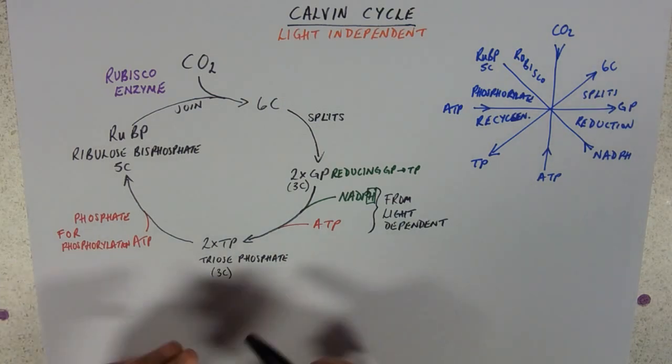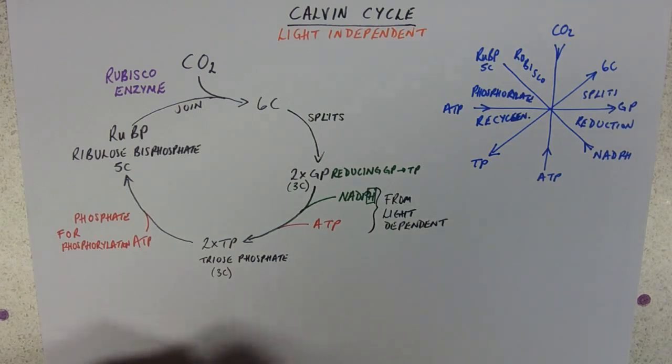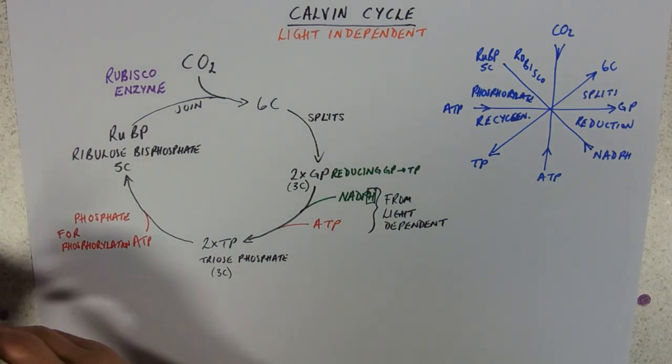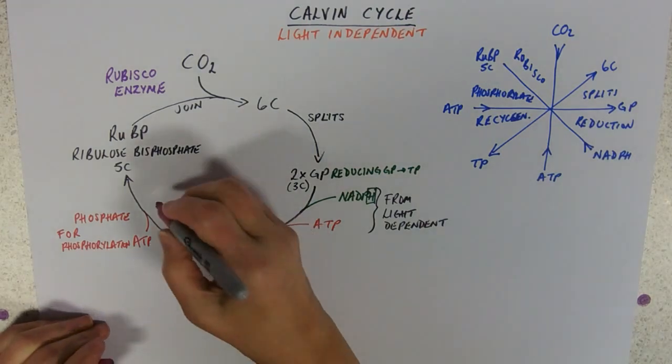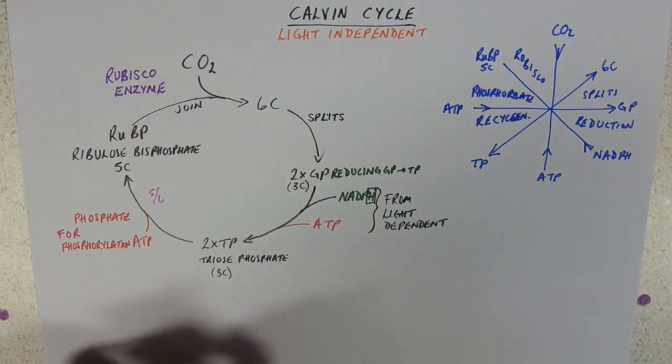So what's the point of making triose phosphate and then remaking your ribulose bisphosphate? Well, of course, not all of your triose phosphate ends up being ribulose bisphosphate. So five-sixths of it is regenerated. This is not an efficient process.